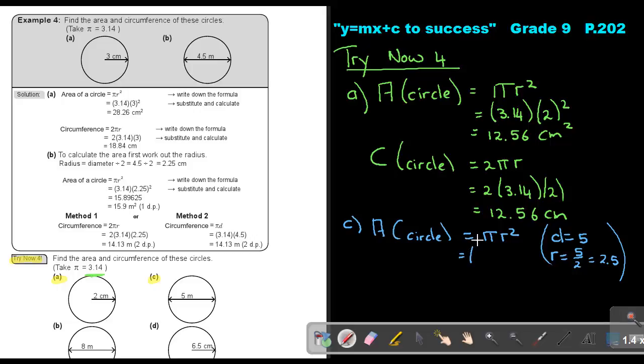So then I will say 3.14, and then what is the radius? It's 2.5, and then square. And that will be 19.625, and that will be in meters squared.